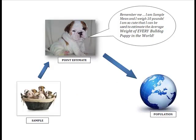You'll remember that at some point in one of my previous videos, we had a sample of bulldog puppies. And from that sample, we weighed them all, we came up with the average weight, and created a point estimate. That was our little puppy, Sample Mean. And he weighed 10 pounds. And with the use of confidence intervals and point estimates, he is so cute that we can use him or her to estimate the average weight of every bulldog in the world.